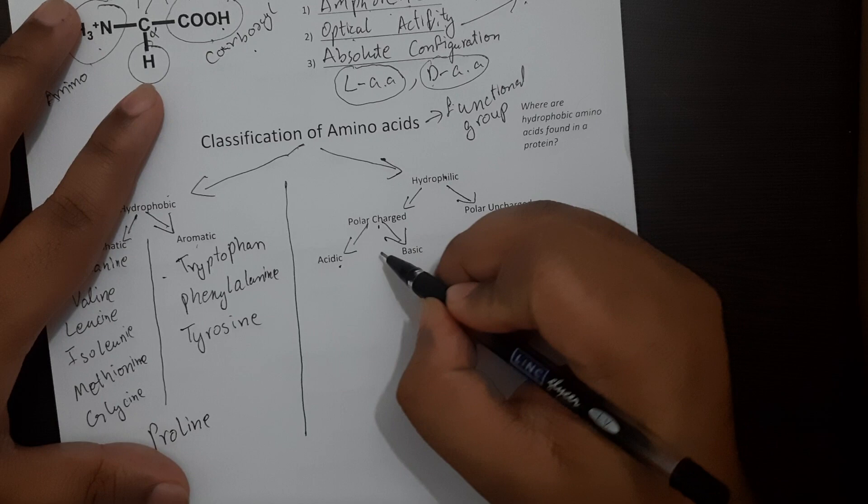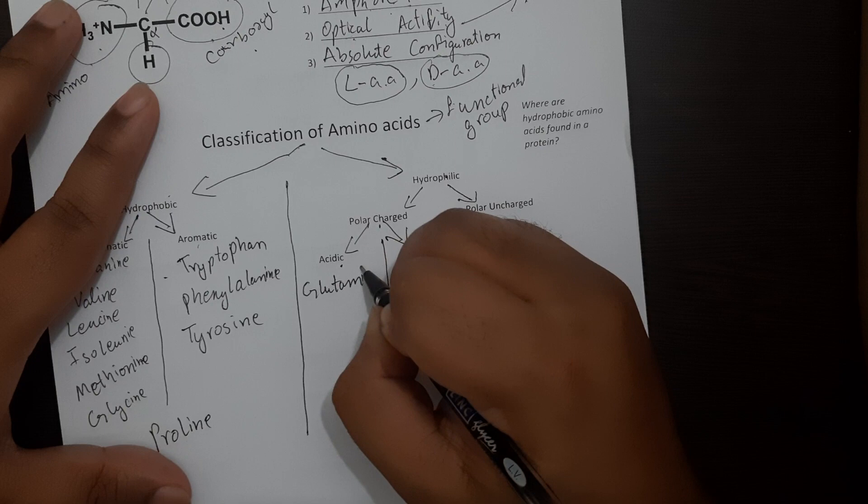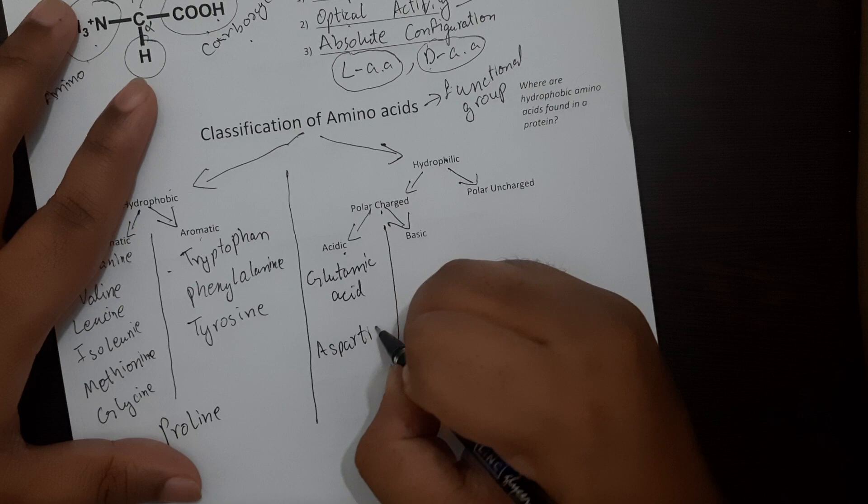Now if you look at your hydrophilic polar charged, the functional group will have a charge to it. Either the charge can be positive or negative. So it can be acidic or basic. If you look at the acidic amino acids, this will include glutamic acid and aspartic acid.